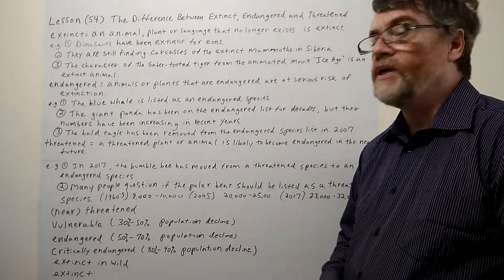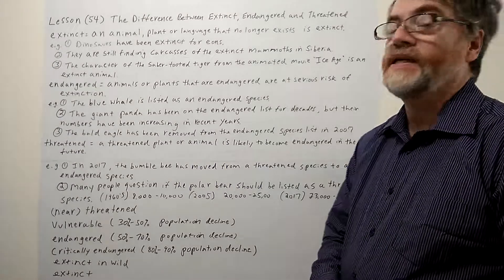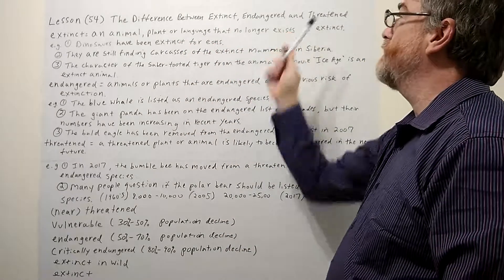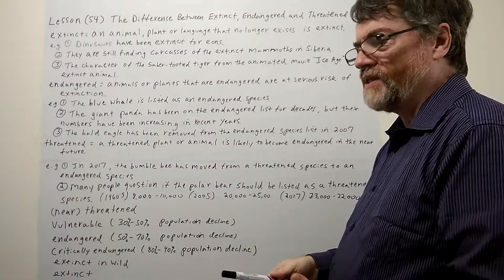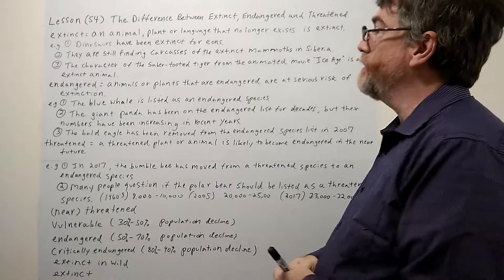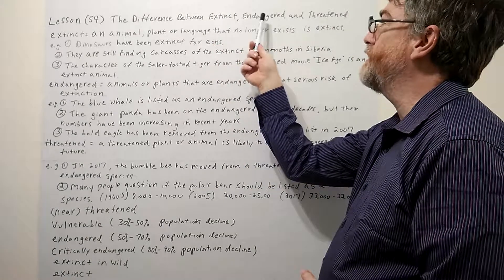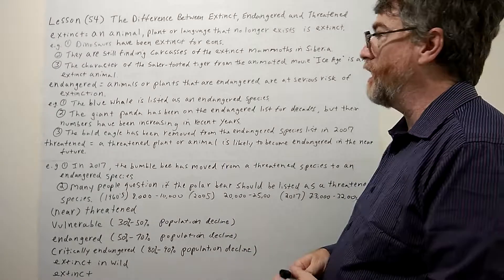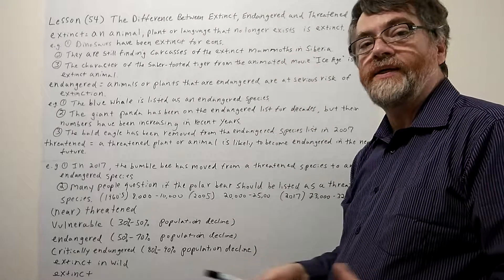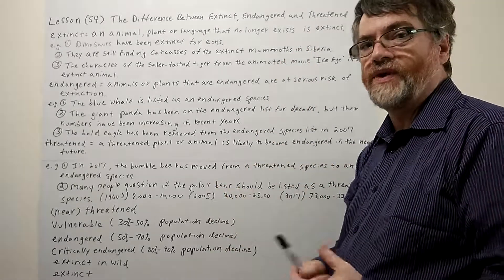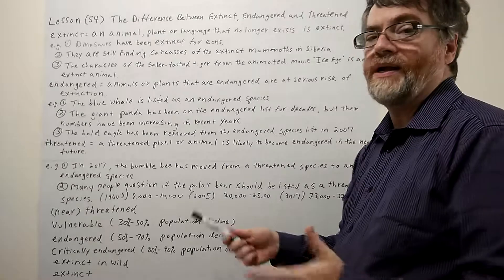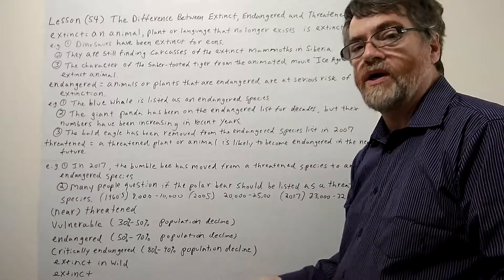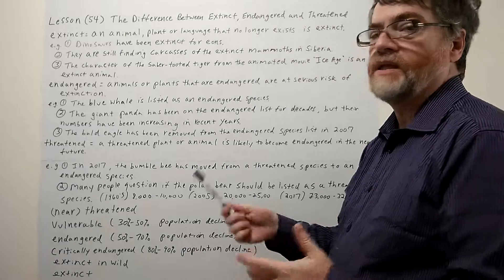Hi, this is Tutor Nick P, and today this is lesson 54. Today we're going to look at the difference between extinct, endangered, and threatened. Yeah, I think even sometimes some native speakers might get confused about this. Most know the difference between extinct and endangered. They get a little confused when they start to get threatened. They kind of all blurs and they think it's the same thing. So I'm going to try to clarify a little bit of it today. These are the three main ones that we come across.